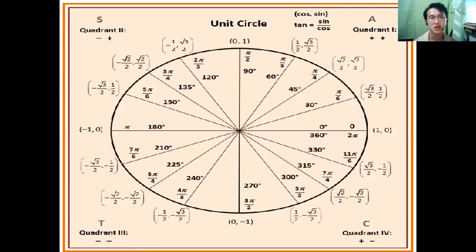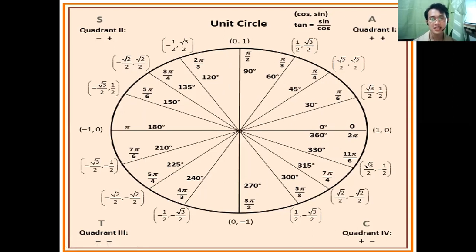Here is the unit circle, showing angles from zero degrees to 30, 45, 60, 90, 120, 135 degrees and so on until 360 degrees. The measurements with a degree sign are the degree values, and next to each is its equivalent radian form. For example, 30 degrees is equal to pi over 6 — they are the same measurement, just in different forms.